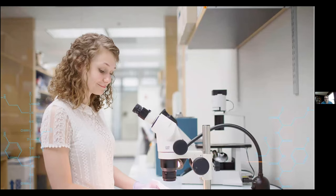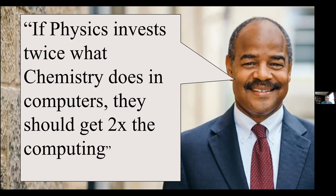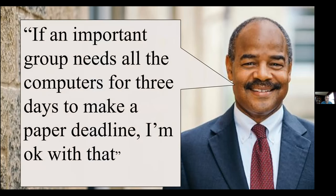That's not the only kind of person who has problems on a campus. Our dean of L&S has problems too, but different ones. He funds, directly or indirectly, a lot of computing resources on campus, and his goal is that those machines — which are quickly depreciating — should always be busy doing research. If they're not immediately serving their primary purpose, he wants to backfill them with something else. He also wants some fairness policy: if the physics department invested twice as much as chemistry, maybe they should get twice the computing. And sometimes a really important group needs all the computers for a short deadline.